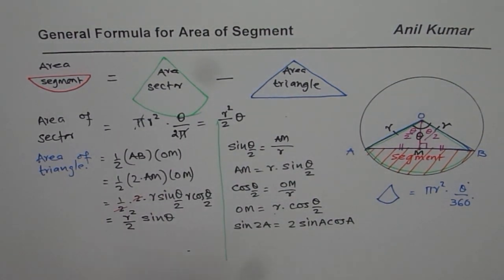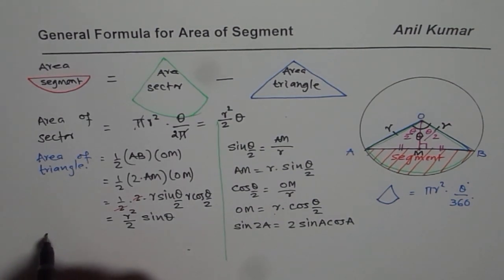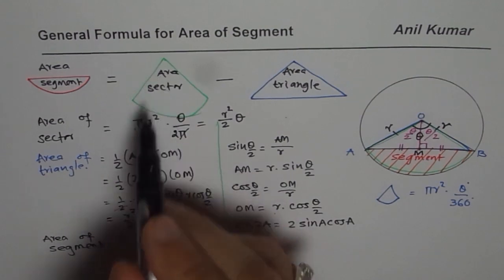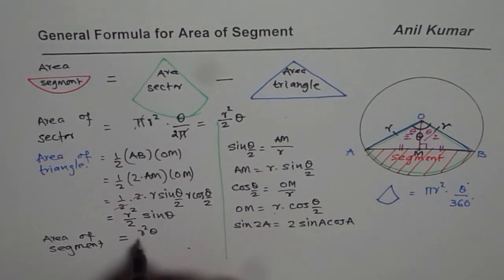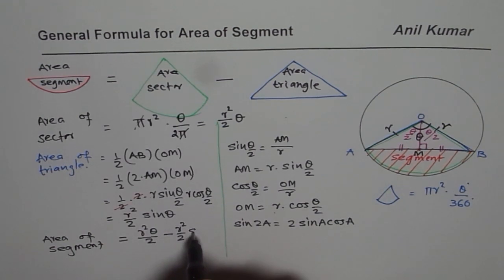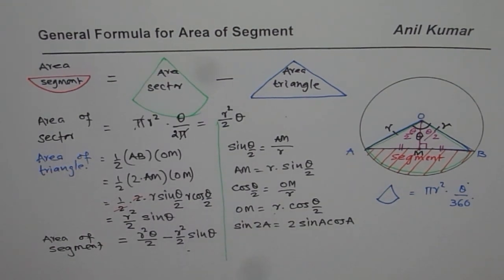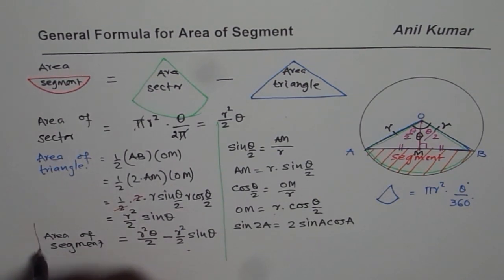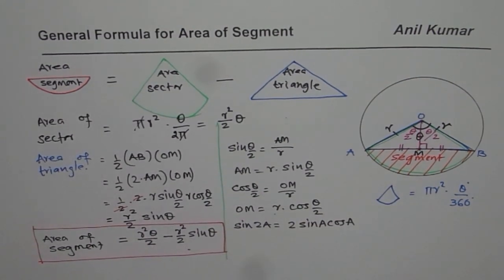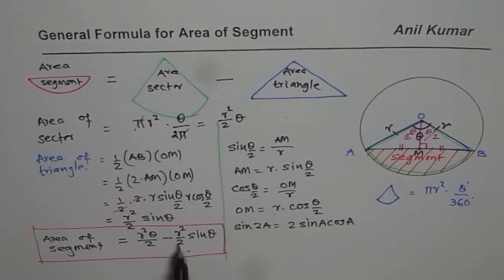Now we will write area of segment. So we have area of segment equals to area of sector is r square theta by 2 minus r square by 2 sine theta. I am not really simplifying it further. You can of course take r square by 2 common and simplify it further.